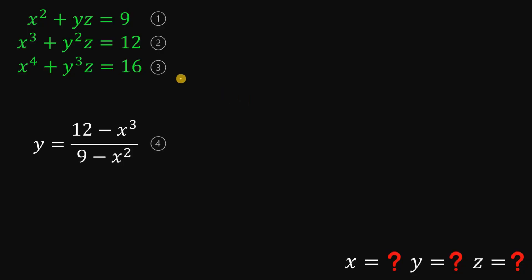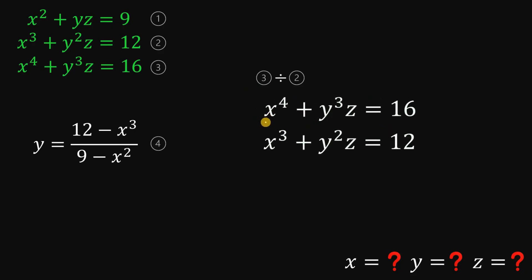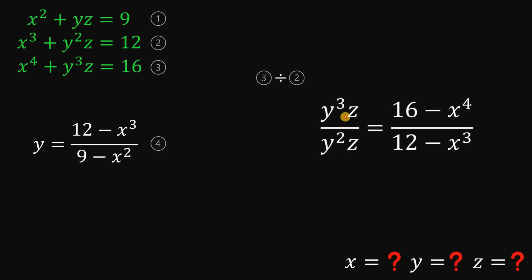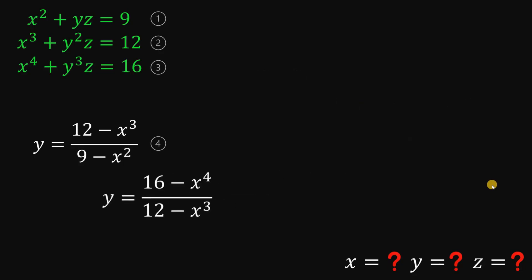Now, to continue, let's take the third equation and divide it by the second equation. Before that, we subtract x raised to the 4th power and x cubed on both sides. Dividing these two equations again eliminates the variable z. Since y cubed over y squared is just y, we get a new expression for y. We call this equation 5.